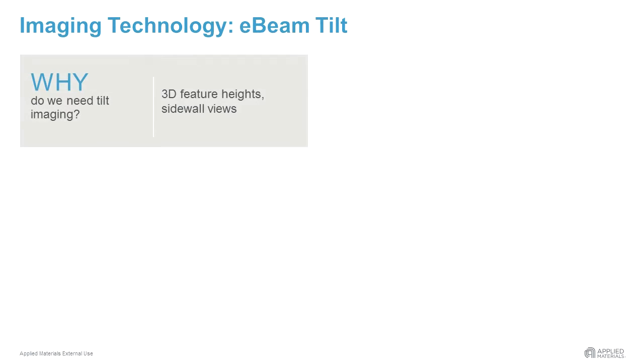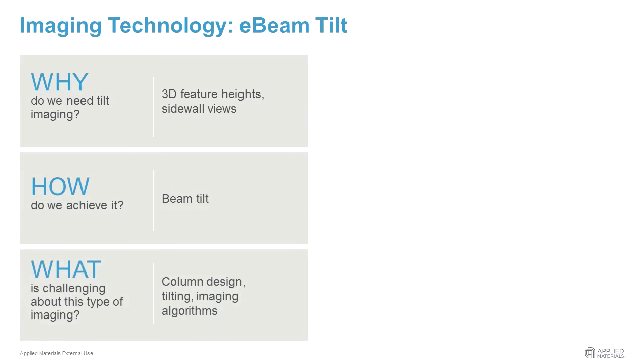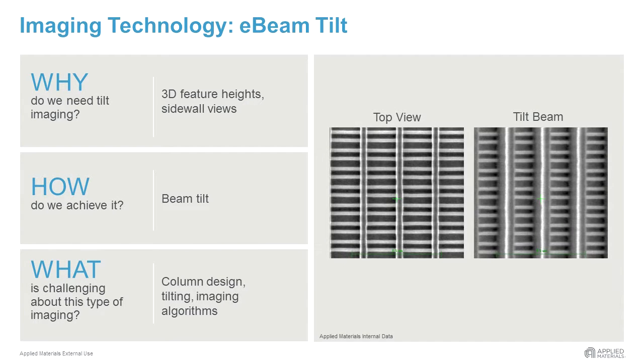E-beam tilt is an important feature which allows for obtaining additional information by tilting the beam so that it can image side structures. It requires a careful design of the e-beam column to maintain the resolution also in tilt mode.